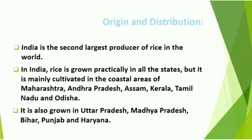India is the second largest producer of rice in the world. In India, rice is grown practically in all the states, but mainly cultivated in the coastal areas of Maharashtra, Andhra Pradesh, Assam, Kerala, Tamil Nadu, Odisha, and some parts of Karnataka — areas where there is more water. It is also grown in Uttar Pradesh, Madhya Pradesh, Bihar, Punjab, and Haryana.